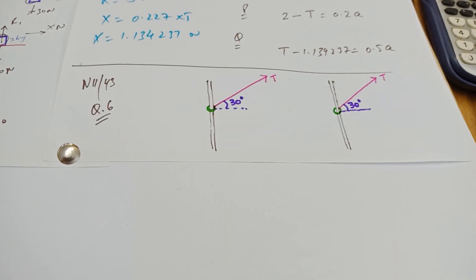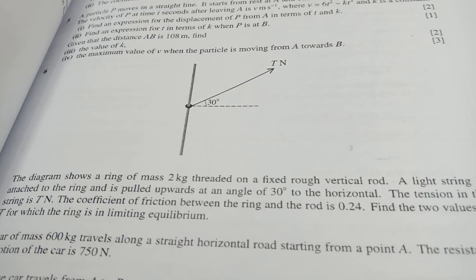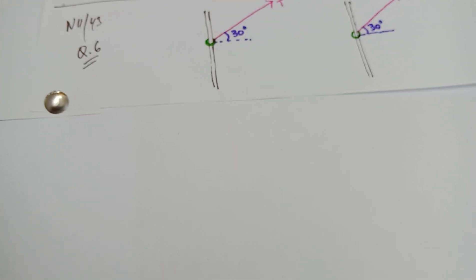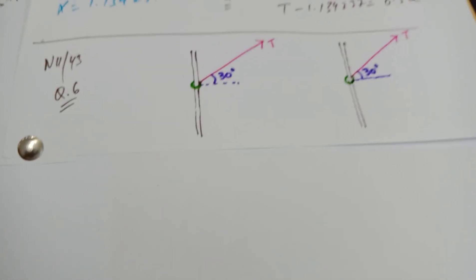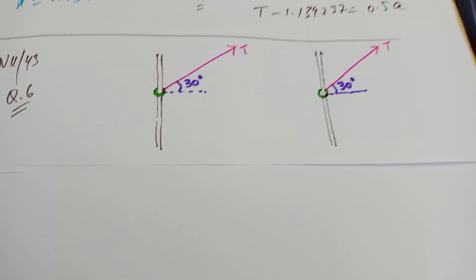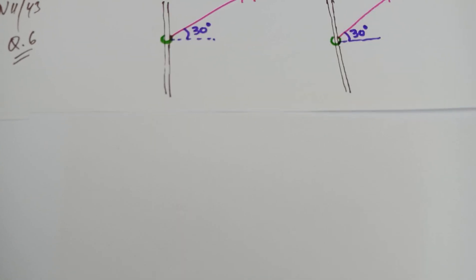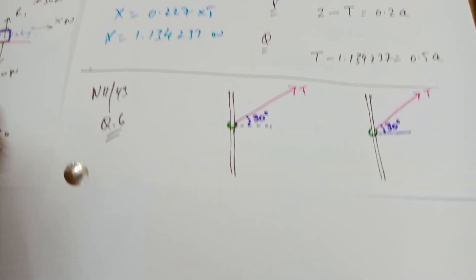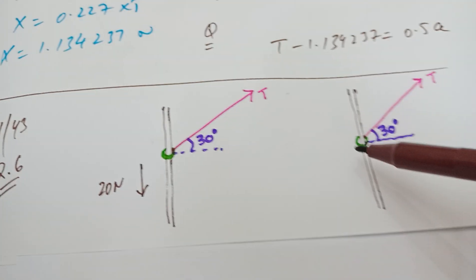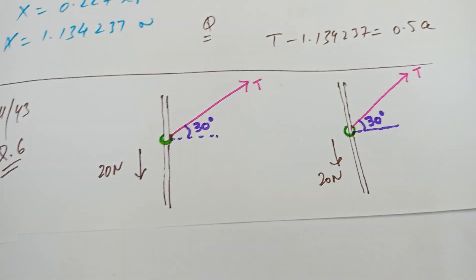Assalamu alaikum and welcome back. This is a question from November 11 variant 43. The question says the diagram shows a ring of mass 2 kg threaded on a fixed rough horizontal rod. I have drawn two diagrams — you'll find out why shortly. In both diagrams I'm showing the weight as 20 newtons.